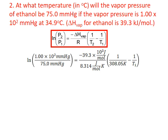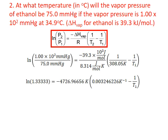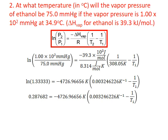Now we simplify wherever we can. 100 divided by 75 gives us 1.3333. Negative 39.3 times 10 to the third divided by 8.314 gives us negative 4726.96656 kelvin — joules per mole cancel out. 1 divided by 308.05 kelvin gives us 0.003246226 kelvin to the negative 1. We take the natural log of 1.333 and that gives us 0.287682.